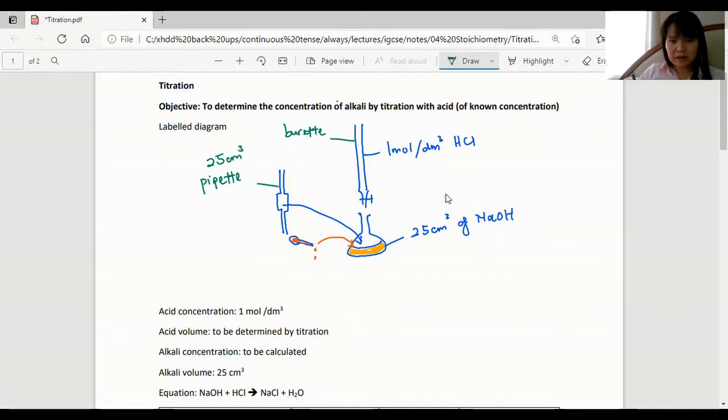This burette is 50 centimeter cubed. This is a conical flask. And this is a dropper, or we can call it a teat pipette.